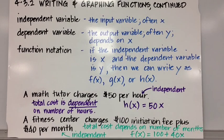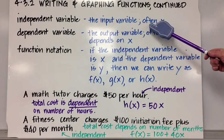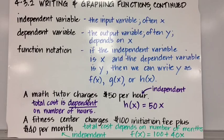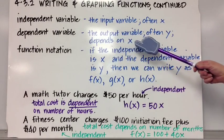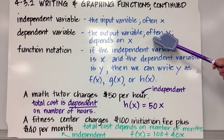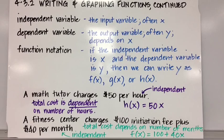An independent variable is the input variable, most often x in our class. The dependent variable is the output variable, often y, because it depends on x. Remember when we built tables, we'd pick a value for x and solve for y? y depended on that value of x we chose.